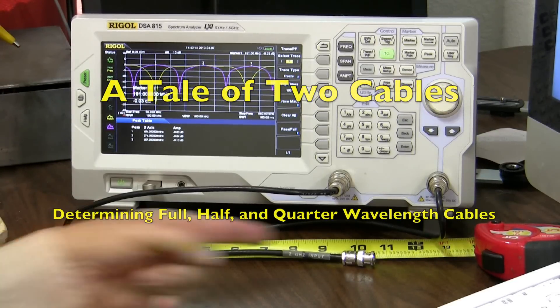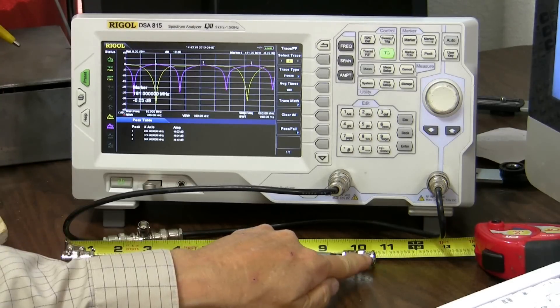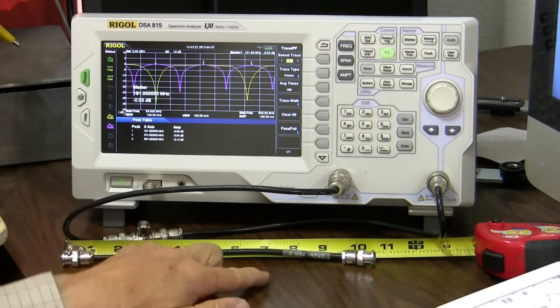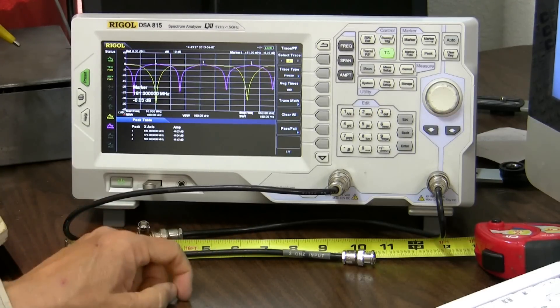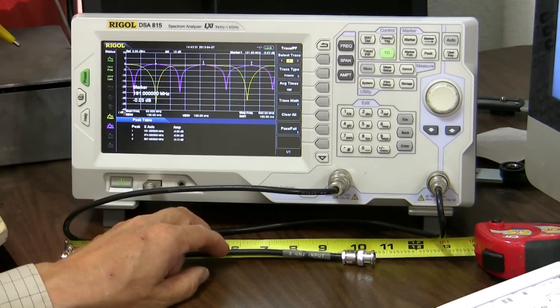Today I'm going to bring you a tale of two cables. This is the shorter of the two. As you can see it's about ten and five-eighths inches long and it's made out of RG223, which is a very good double shielded quarter-inch cable that is used for test leads primarily.